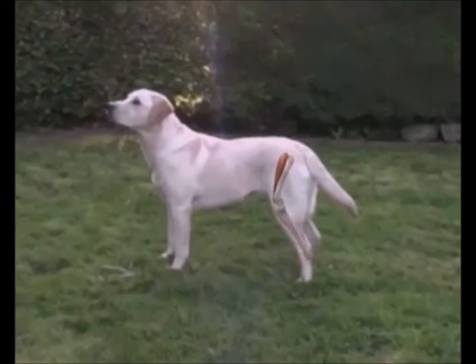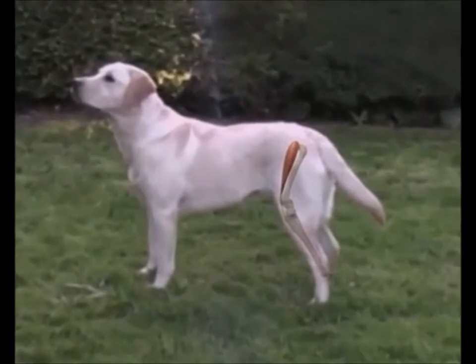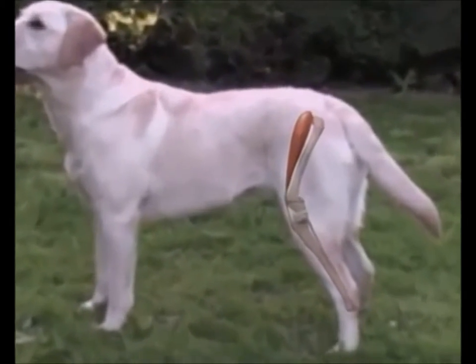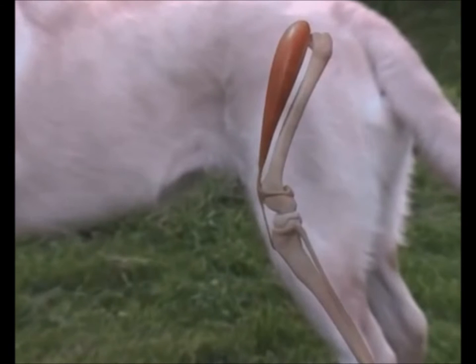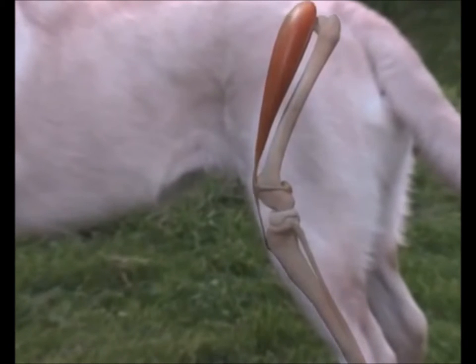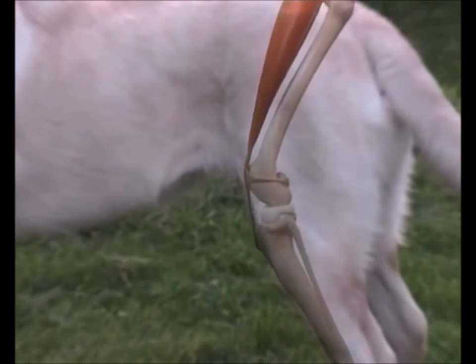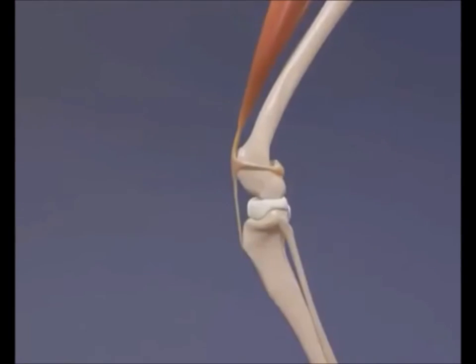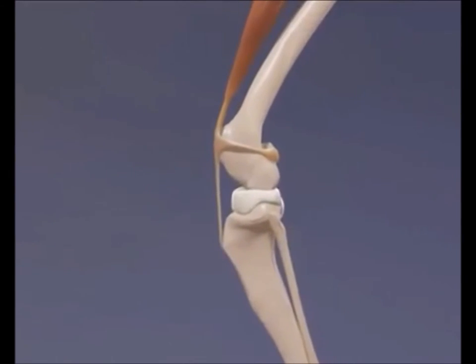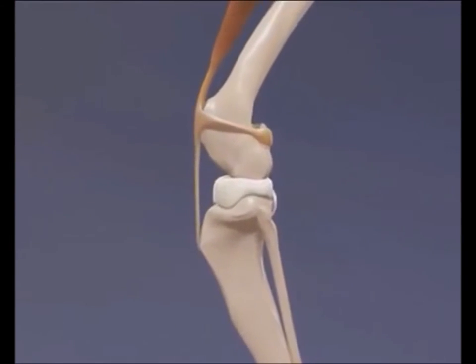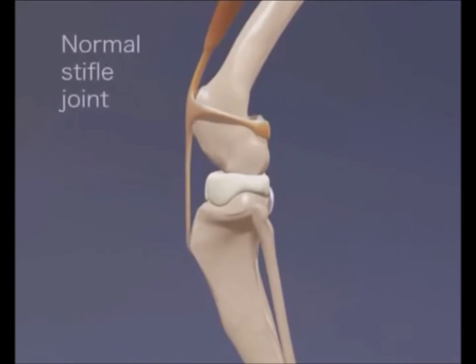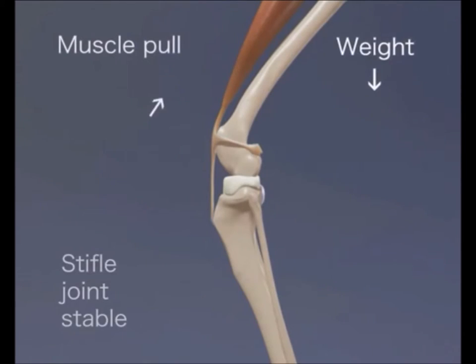The stifle is one of the largest articular joints in the body. A synovial articulation, it enables species to walk with a crouched gait, functioning to decrease an animal's centre of gravity. This acts to reduce energy input, hence increasing movement efficiency.